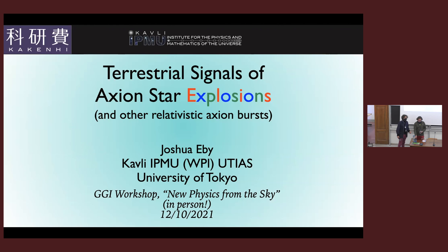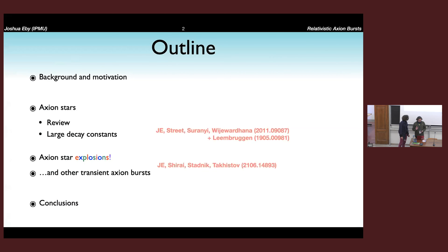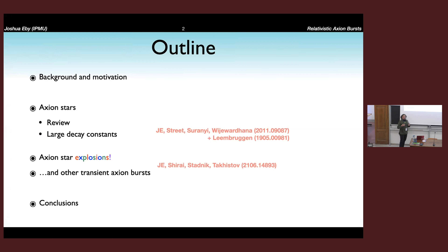Basic outline: I'll give some motivation for this work, go through some details about axion stars and in particular what happens at different masses and decay constants, and then I'll turn to axion star explosions — how these occur, what the signatures would be in an experiment, and a more general analysis of other kinds of axion bursts.